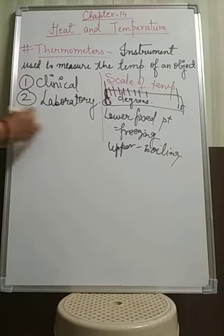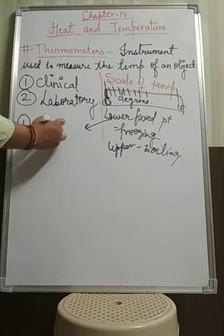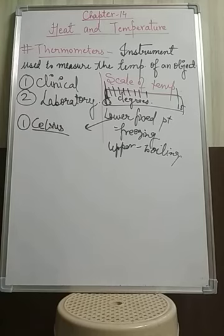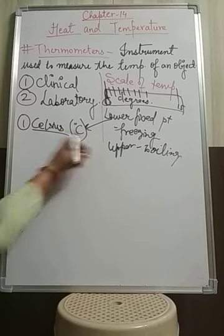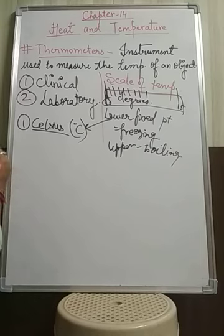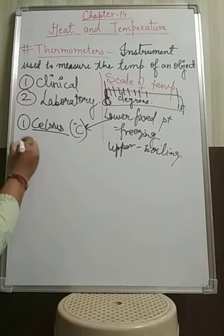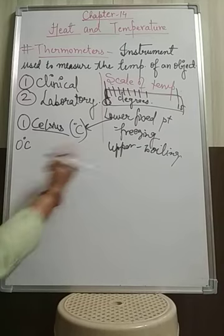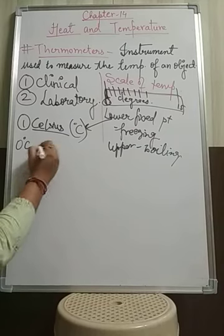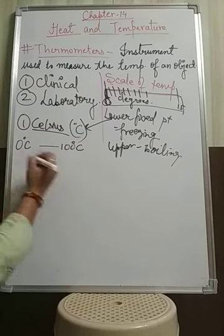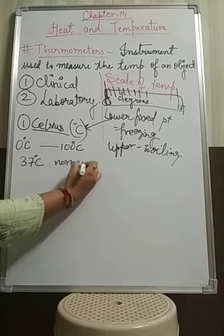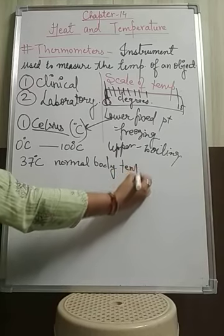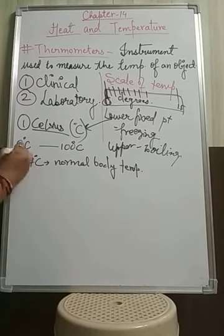The first scale is the Celsius scale. The temperature on this scale is in degrees Celsius. The lower fixed point is 0 degrees Celsius and the upper fixed point, the boiling or steam point, is 100 degrees Celsius. The normal body temperature on the Celsius scale is 37 degrees Celsius, and the range of this scale is between 0 and 100 degrees Celsius.